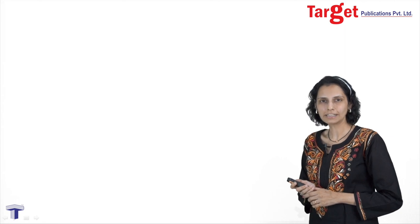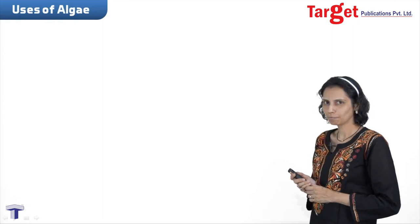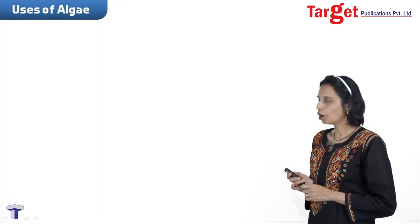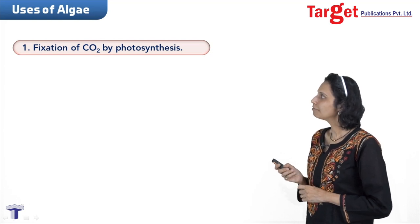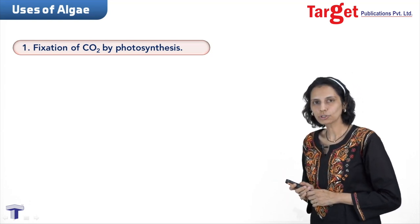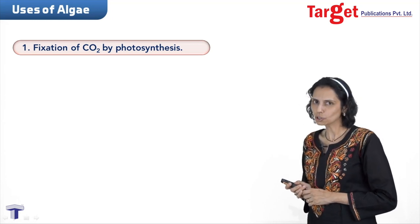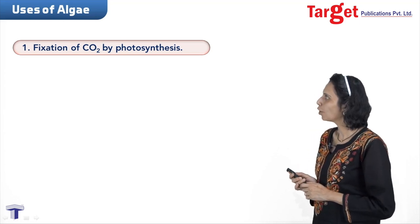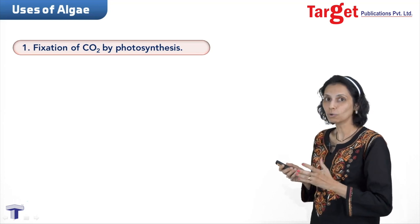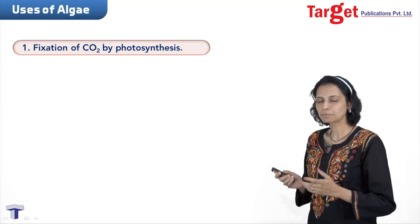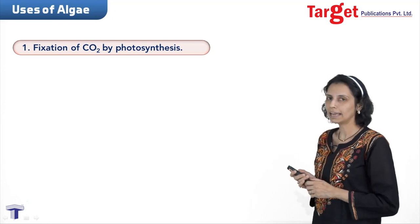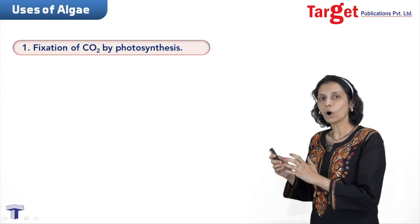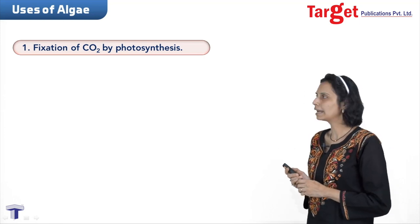Good morning students. Last time we discussed the classification of thallophyta or algae. Today we are going to discuss the uses of algae. The first and very important use of algae is CO2 fixation by photosynthesis. Algae are autotrophic in nature, so they perform photosynthesis. About half the amount of CO2 present on Earth is fixed by algae, and they make oxygen available for aquatic life as well.